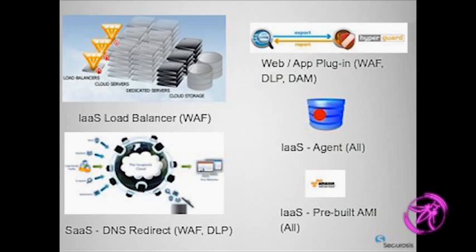Here are a couple of monitoring examples — not an endorsement of any particular technology. With GoGrid, within the load balancers they've deployed F5 as a web application firewall, built right into the infrastructure. You also have a more traditional SaaS model where you do a DNS redirect to enable WAF and DLP, bolting it on anywhere and redirecting traffic back into your own cloud. For infrastructure as a service, there's agent-based deployment for database security and database activity monitoring. And pre-built AMIs where you shove the monitoring piece into an AMI and tell it which applications and instances you want monitored.